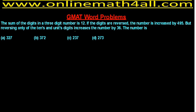Here, let us see the problem on the board. The sum of the digits in a 3-digit number is 12. If the digits are reversed, the number is increased by 495. But reversing only the tens and units digits increases the number by 36. The number is?